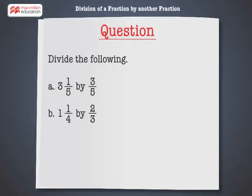Divide the following: 3 and 1 by 5 divided by 3 by 5, and 1 and 1 by 4 divided by 2 by 3.